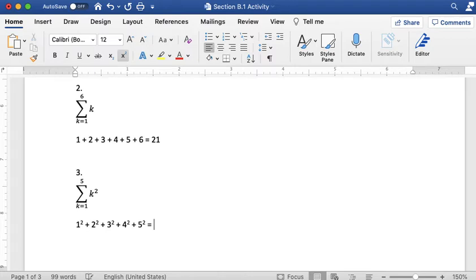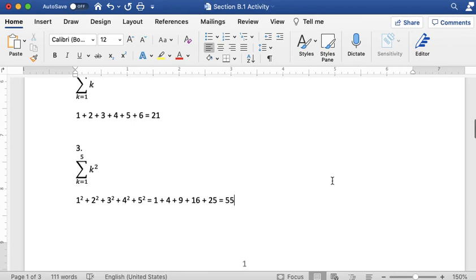Then when we square those, we get 1 plus 4 plus 9 plus 16 plus 25. And then finally add all of those together and you should get 55. So 55 is going to be my answer.